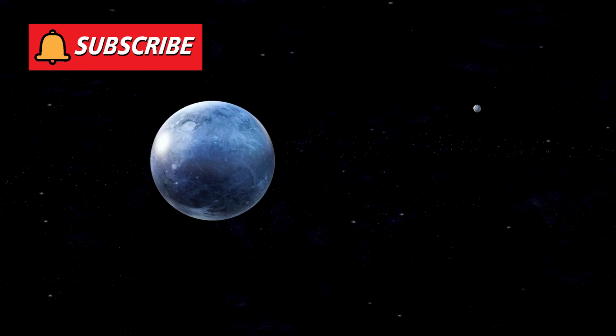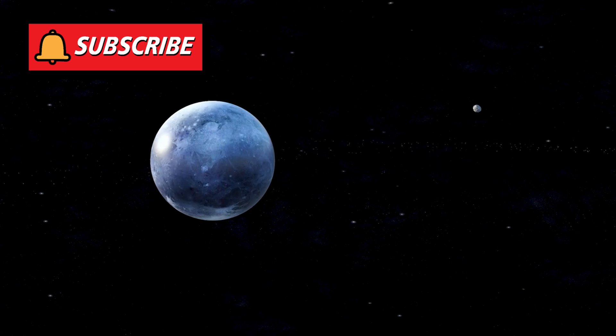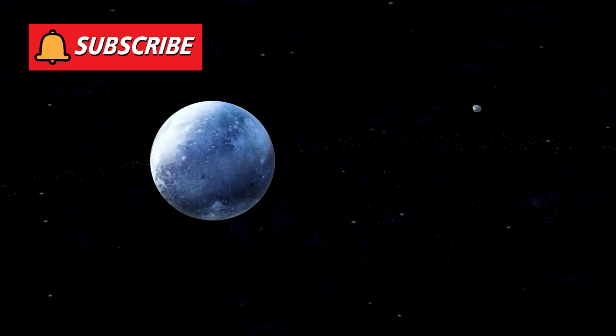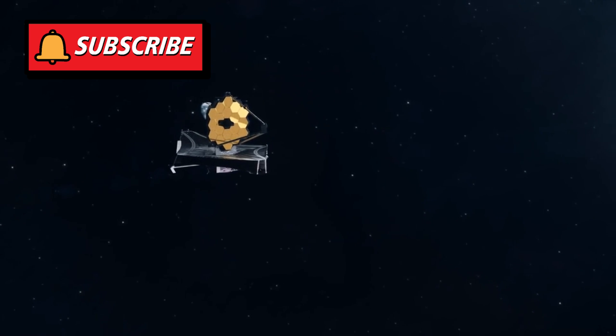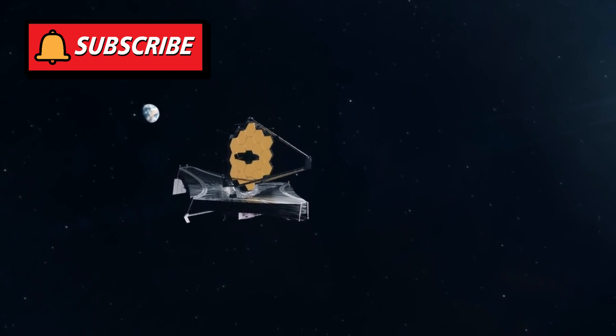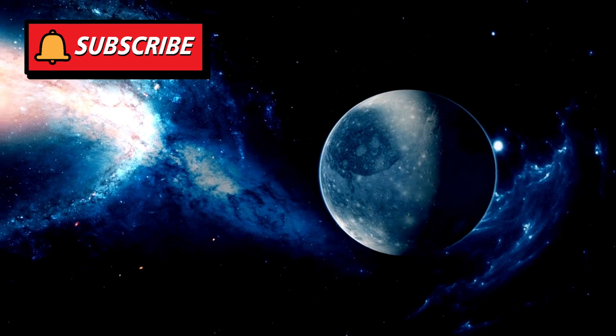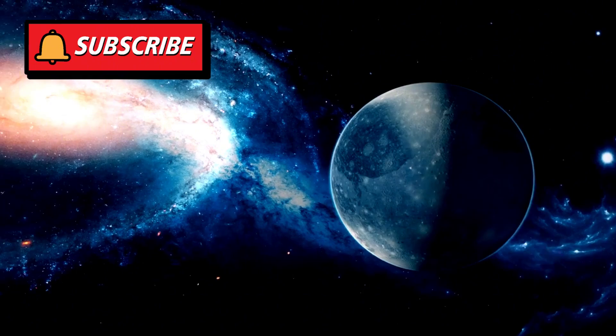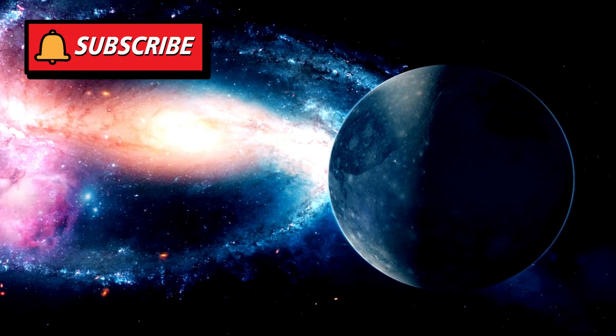Pluto's potential fate also mirrors broader questions about solar system evolution, such as how Mars' moons formed or why Uranus orbits on its side. Technological advances, like the James Webb Space Telescope, may soon provide clearer answers. By analyzing Pluto's surface chemistry and Neptune's atmospheric disturbances, scientists can refine their predictions.